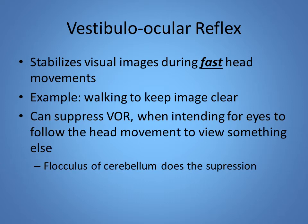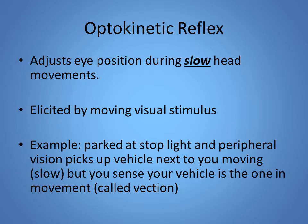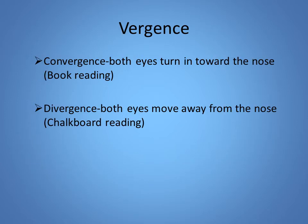We can suppress the vestibuloocular reflex when we want to turn our head and have our eyes go with it, and it is the cerebellum — the flocculonodular lobe — that does that suppression. The optokinetic reflex is like watching train cars go by or watching other vehicles pass on a cross street. Convergence is like when you're reading a book; divergence is when you're looking at something farther away, like on the chalkboard.